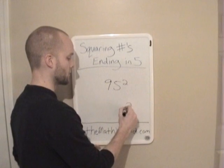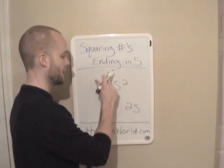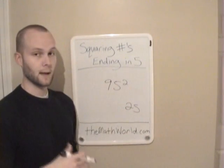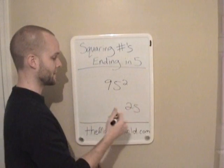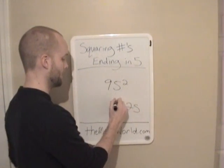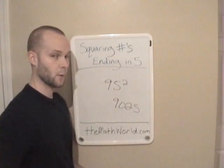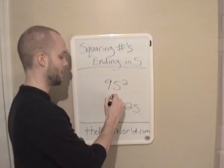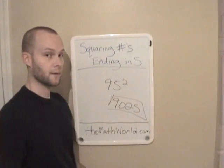Any time you see this, you just write down 25. And 9 times the next highest number, which is 10 — 9 times 10 is 90. So 95 squared is 9,025.